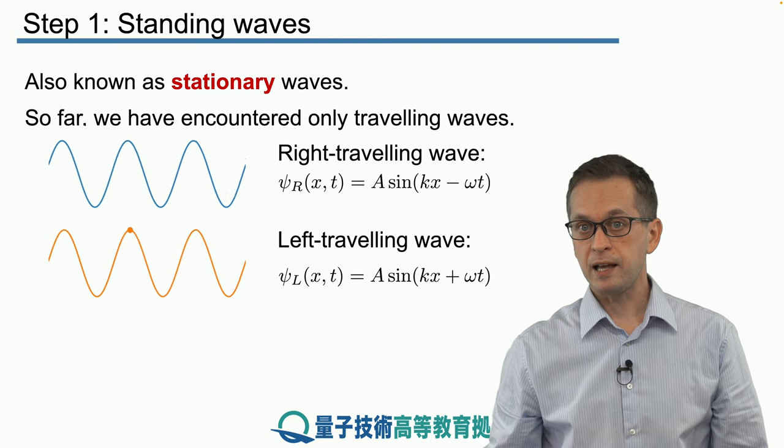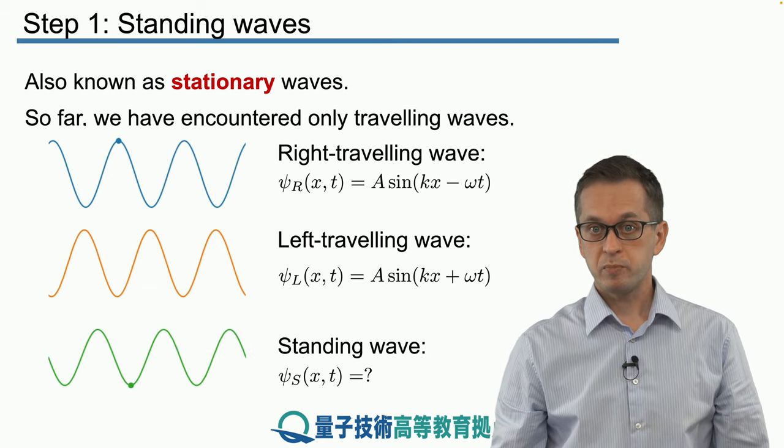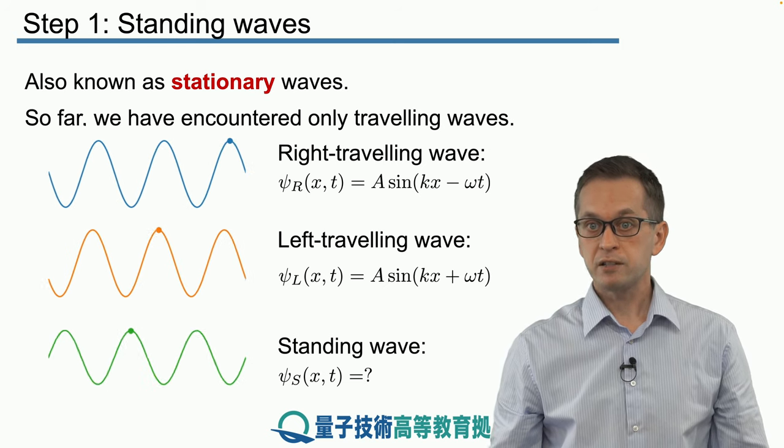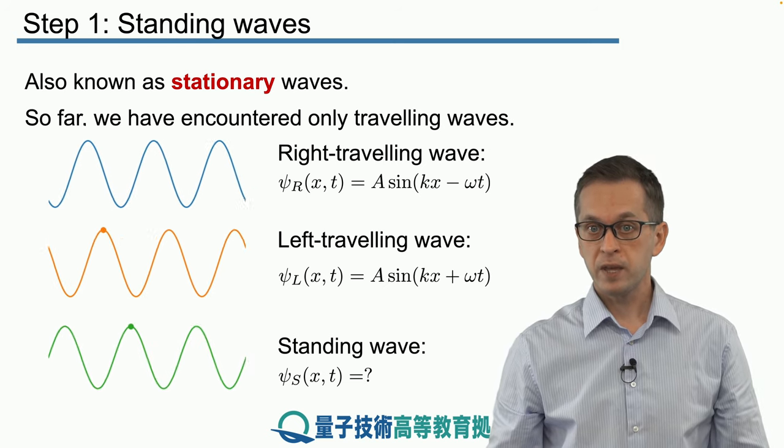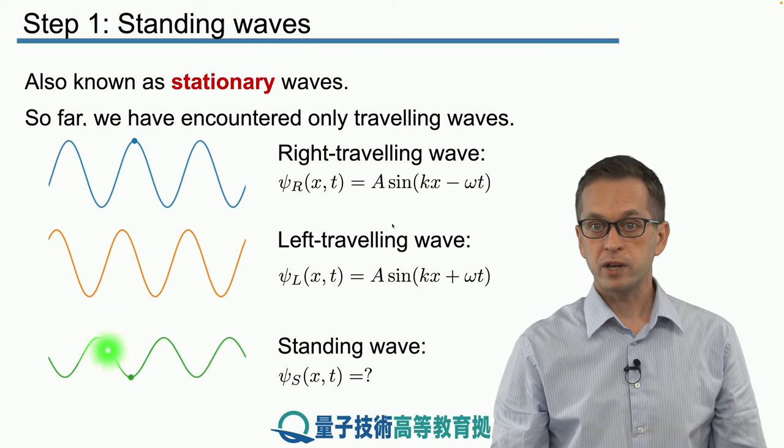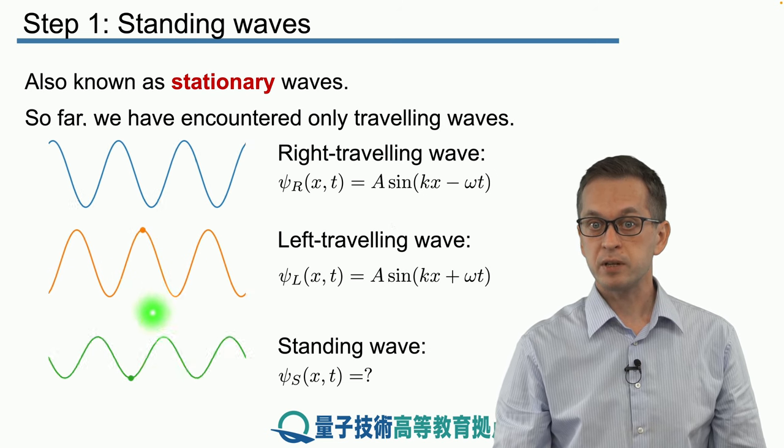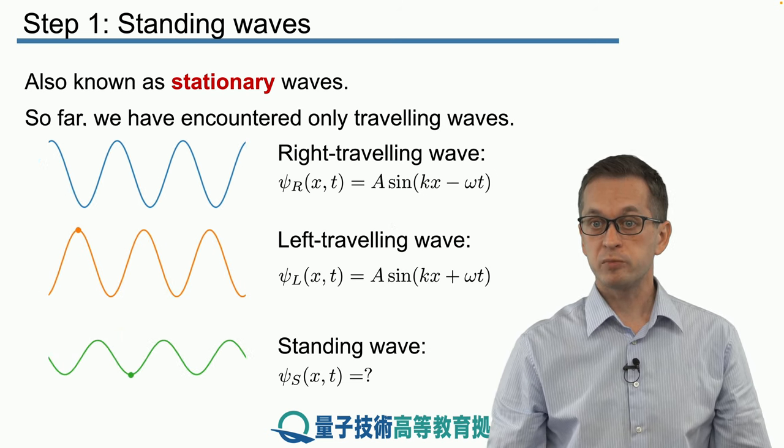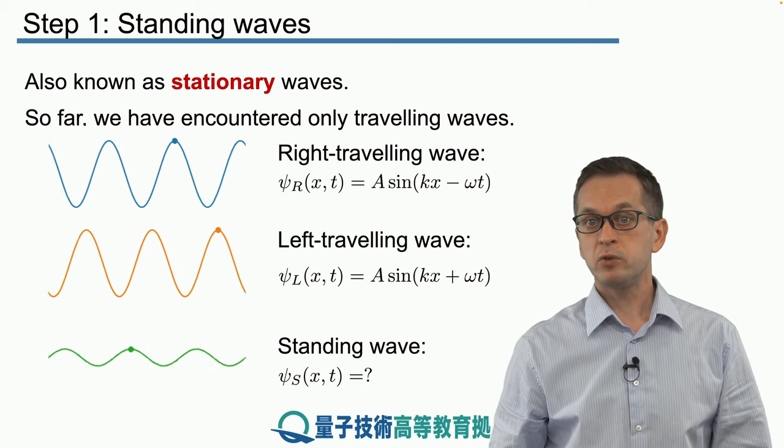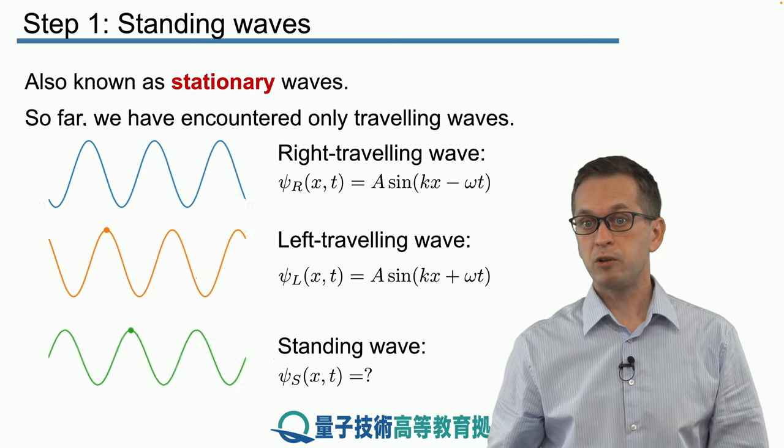On the other hand, standing waves or stationary waves look something like this. Despite their name, they're not really standing, they're not really stationary. They are still moving, they are evolving in time, but they are not really travelling left or right. As you can see here, at this point at the same spatial coordinate x, it's just moving up and down with time. So the question now is how do we describe such a wave function and how do we produce it?